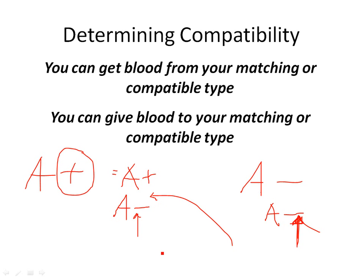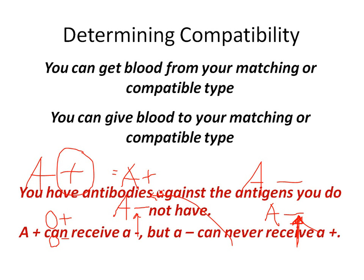One more question: if I have A positive — we know you can give me A positive and A negative — can you give me O positive? And for that matter, can you give me O negative? The answer is yes, but try to reason out why. Here are some of our rules: you have antibodies against the antigens you do not have; A positive can receive A negative, but A negative can never receive A positive; and the third rule is you're trying to match or give compatible antigens.